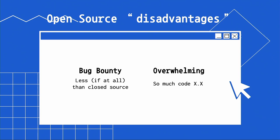There are some disadvantages of open-source research. The first is for bug bounties — if you find a vulnerability in the Linux kernel, you most likely won't get a bounty for it, unlike Apple or Microsoft Windows. And from my own personal experience, open-source research can be a bit overwhelming because having the whole source code means you might waste time trying to understand code that isn't relevant to what you're researching, only because you want to know how it works.